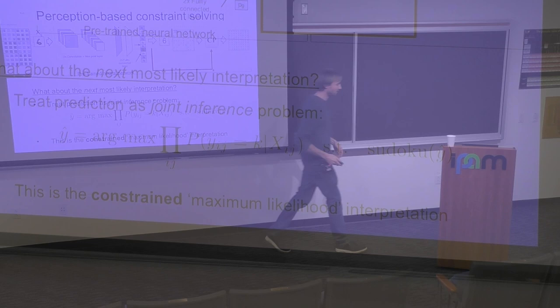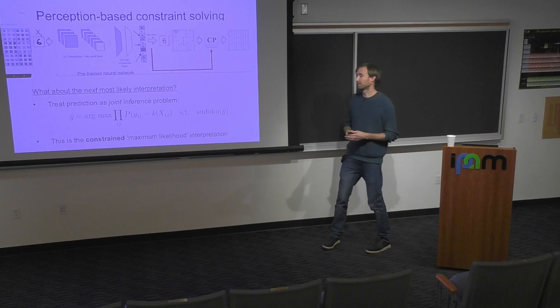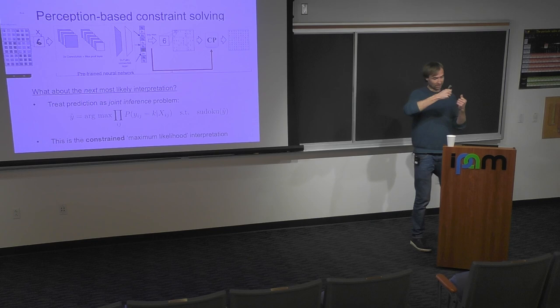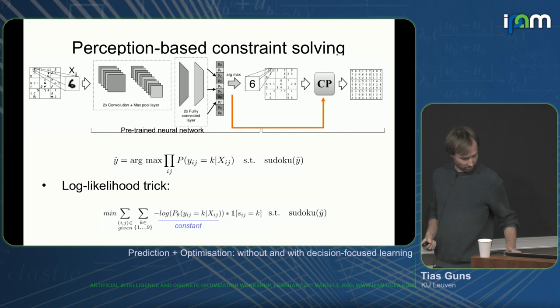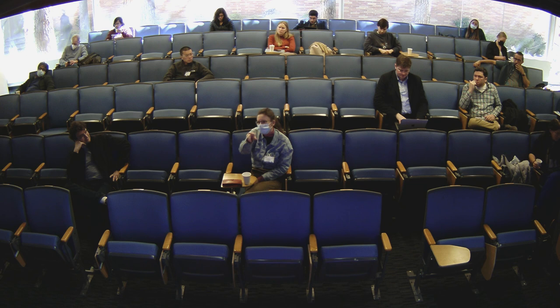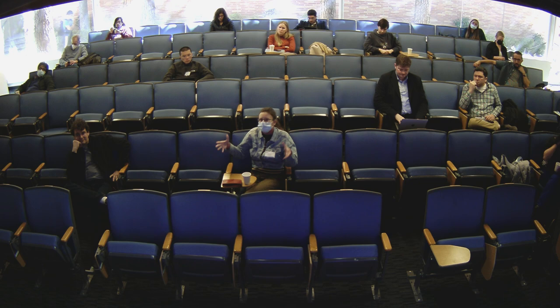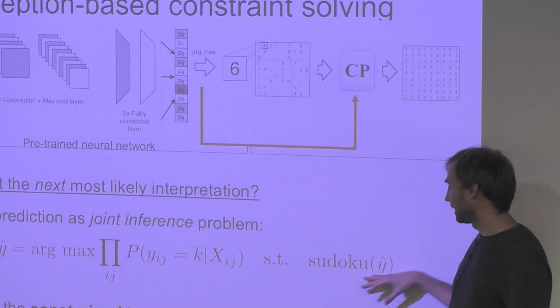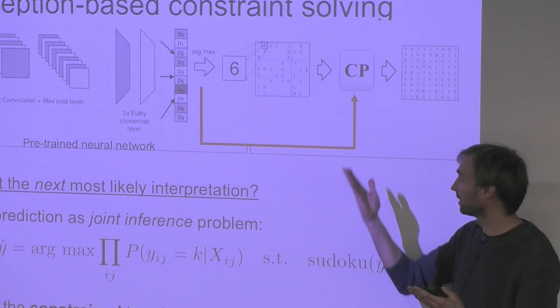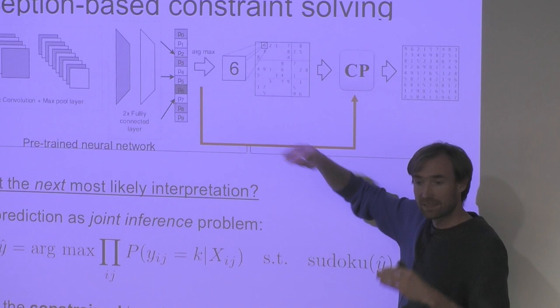This is a constraint maximum likelihood interpretation. With the standard log-likelihood trick, you get a nice linear objective function: for each cell and each possible label, you get a constant. You give that to any constraint solver and it gives you the solution. The solver is asked: find an interpretation that can be completed — all empty cells can be filled to satisfy all of the rules and lead to a consistent solution.